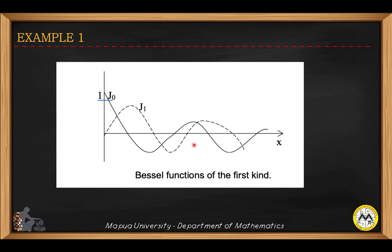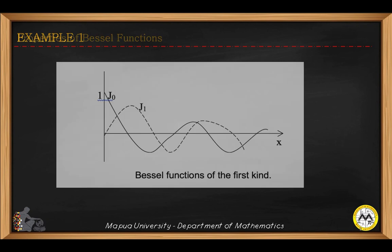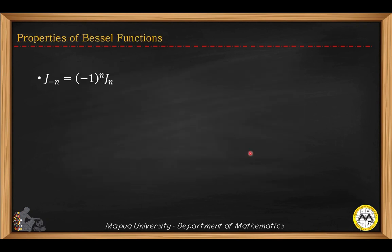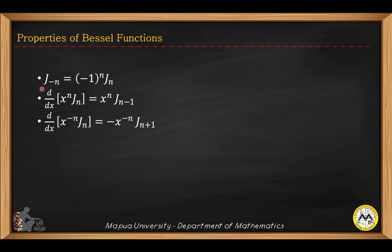This is the graph for J sub zero, and this is the graph for J sub one. We can use the following properties of the Bessel functions to evaluate integrals or derivatives. The first property converts negative n to positive n. The second derivative property can be used to evaluate integrals. For the third property, you can cross-multiply dx and then integrate, which reduces the value of n by one. The recurrence formula reduces n further, and the fifth property involving a derivative can be used to find the derivative of J sub n.